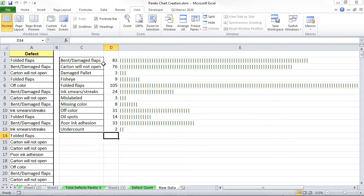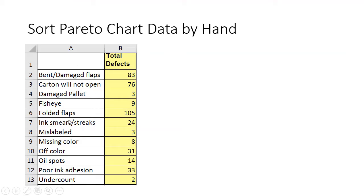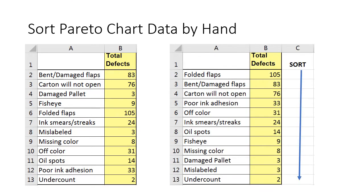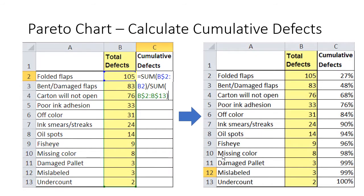Once we've got that summarized, we can start developing a Pareto chart. What we have to do is take that data and sort it in descending order. You can do this manually or with a sort function in Microsoft Excel. Then we have to calculate the cumulative defects — summing the total number and dividing by the total to come up with a cumulative percentage for each one of those bars.